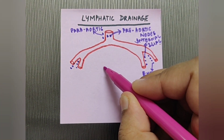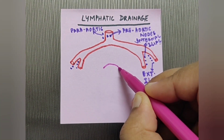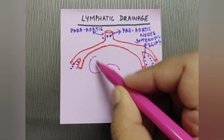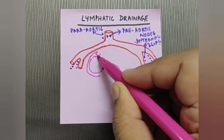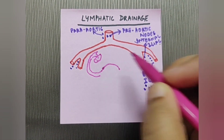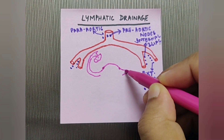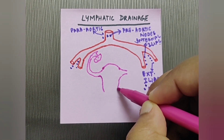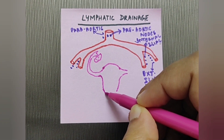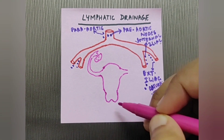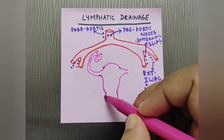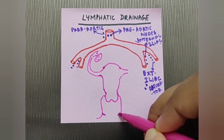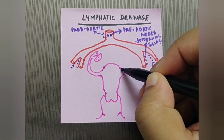I'm drawing the uterus here, with the fallopian tube and the ovaries on either side. I'm also drawing the body of the uterus, the cervix, the vagina, and the region of the hymen.